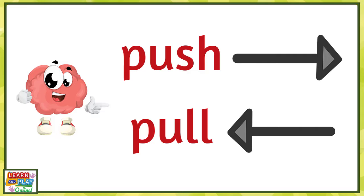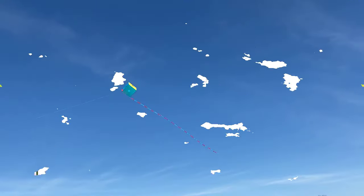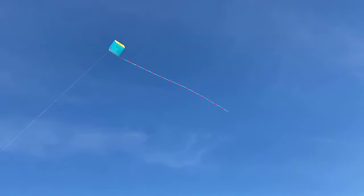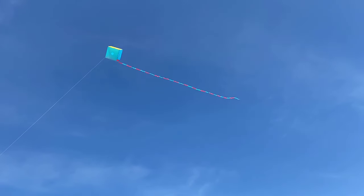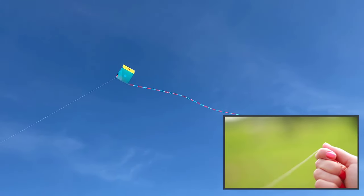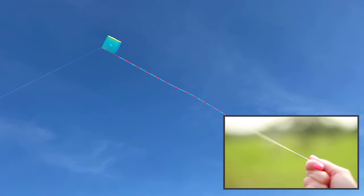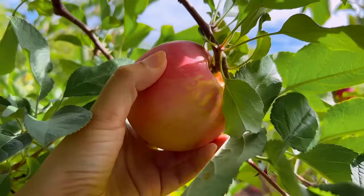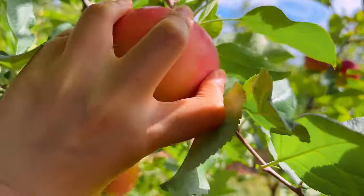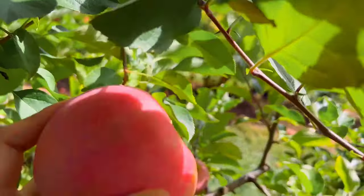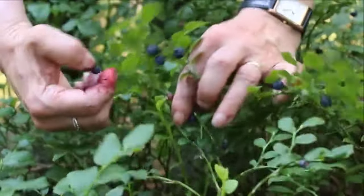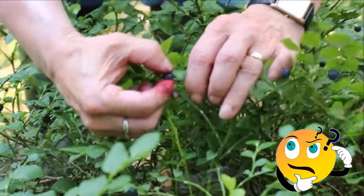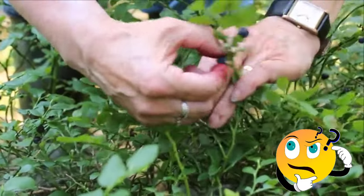Let's take a look at some examples of pull. Have you ever flown a kite on a windy day? It is a lot of fun seeing your kite flying in the sky, but to make sure you don't lose your kite, you need to pull on the rope to keep it from flying away. Another example of a pulling motion is when fruit and vegetables are being harvested. In order to pick the produce, you have to pull the fruit or vegetable away from the mother plant and bring it towards you.